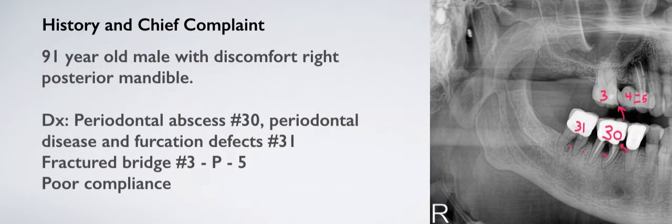This is a 91-year-old male with discomfort in the right posterior mandible. You can see his periodontal disease, periodontal abscess in tooth number 30. He had caries and defects in teeth number 30 and 31, and periodontal disease in both.